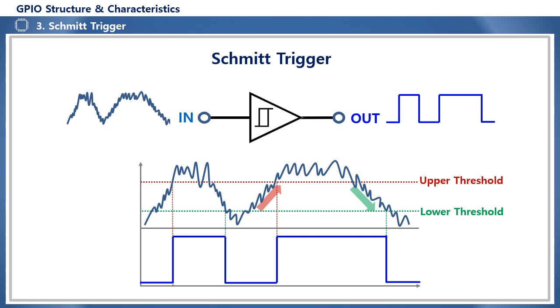The Schmitt trigger is a circuit whose operating structure is such that in the low to high transition region, logic becomes high when the upper threshold voltage is exceeded. And in the high to low transition region, logic becomes low when the lower threshold voltage is below. This circuit operating characteristic is used to create a noise-free digital waveform.